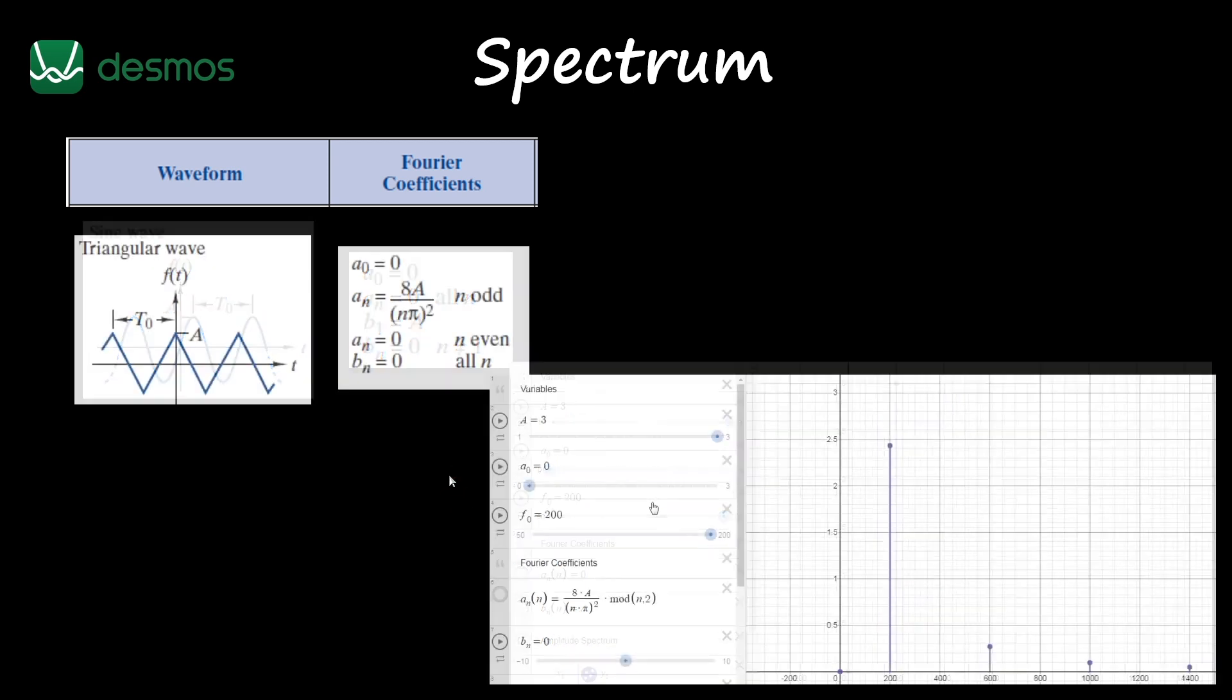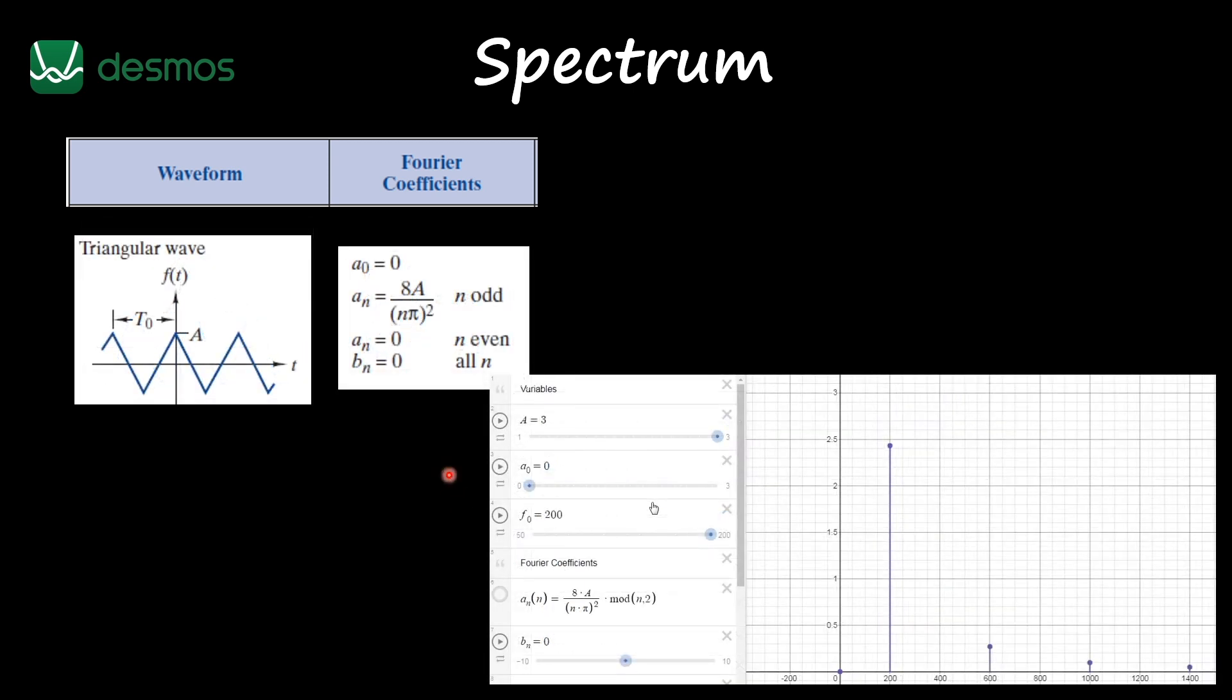All right, so let's see now our triangle wave. A triangle wave is a little bit more complex than the sinusoidal wave because we have more Fourier series, more Fourier coefficients, more harmonics also. So we have our fundamental here and then our third, fifth and seventh harmonic represented in our amplitude spectrum.